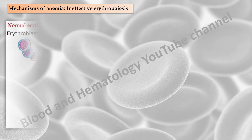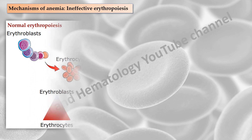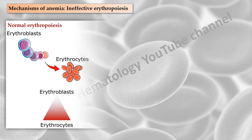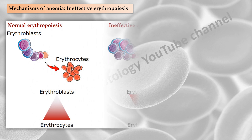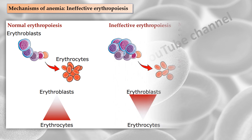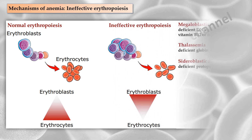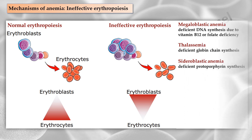When erythropoiesis is effective, the bone marrow is able to produce functional erythrocytes that replace the daily loss of red blood cells. Ineffective erythropoiesis refers to the production of erythroid precursor cells that are defective. These defective precursors often undergo apoptosis in the bone marrow before they have a chance to mature to the reticulocyte stage and be released into the peripheral circulation. Several conditions such as megaloblastic anemia, thalassemia, and sideroblastic anemia involve ineffective erythropoiesis as a mechanism of anemia.